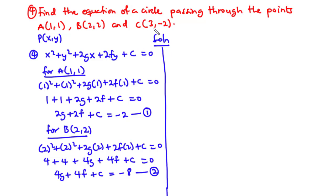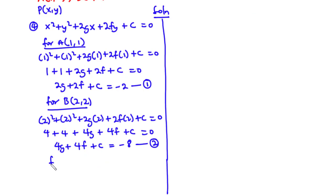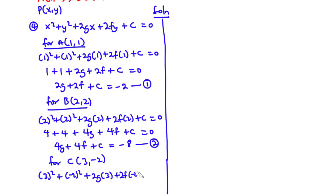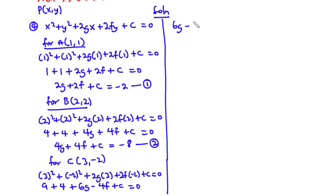For point C(3,-2): 3 squared plus negative 2 squared plus 2g times 3 plus 2f times negative 2 plus C equals 0. Simplifying: 9 plus 4 plus 6g minus 4f plus C equals 0. Since 9 plus 4 is 13, we get 6g minus 4f plus C equals negative 13. Call this Equation 3.